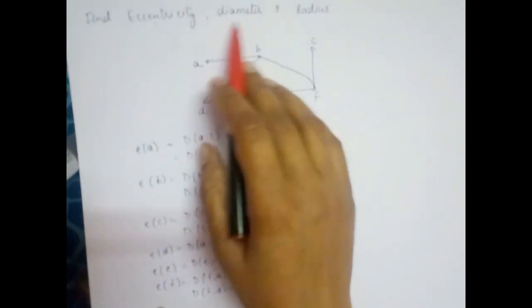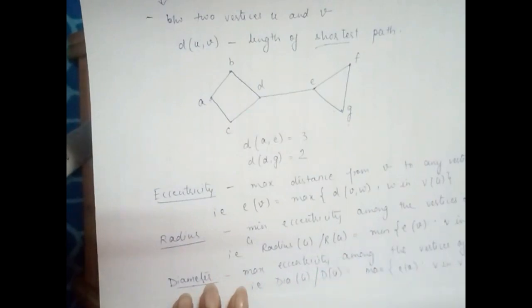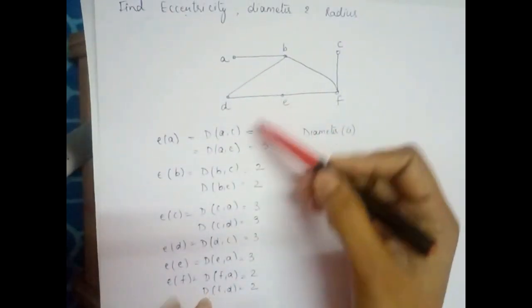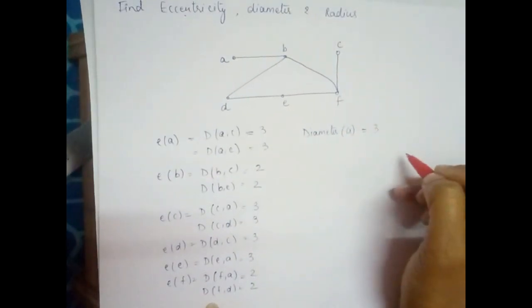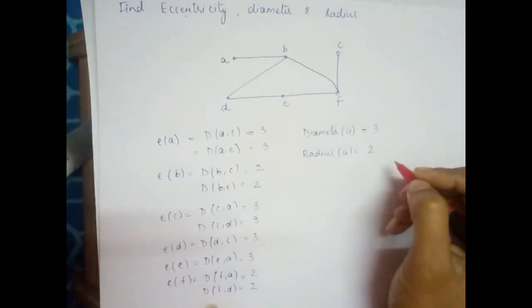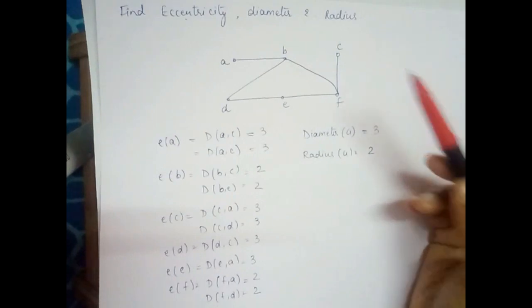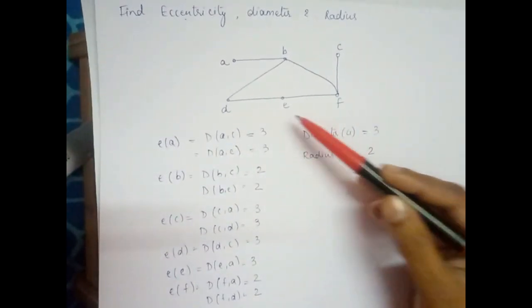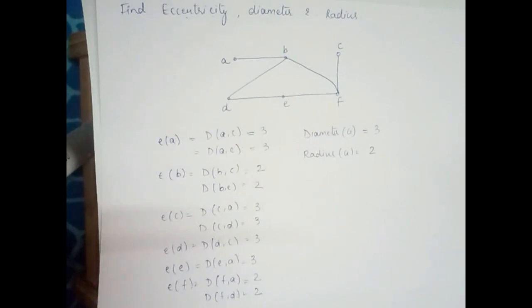Now for the diameter: it is the maximum eccentricity among all vertices. The eccentricities are — a: 3, b: 2, c: 3, d: 3, e: 3, f: 2. The maximum value is 3, so the diameter of G is 3. The radius is the minimum eccentricity, which is 2, so the radius of G is 2. This is how we calculate eccentricity, diameter, and radius for a graph. Thank you.